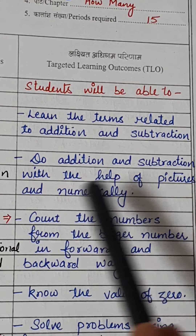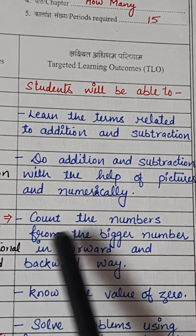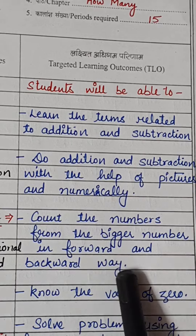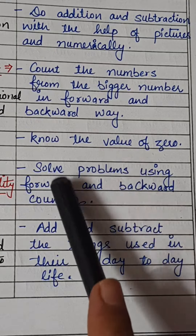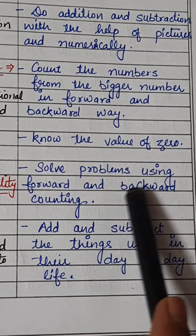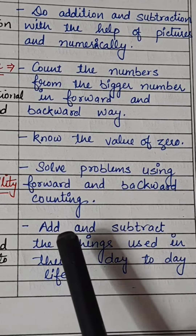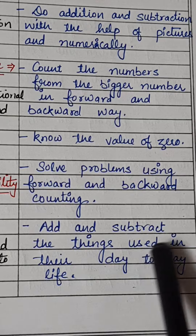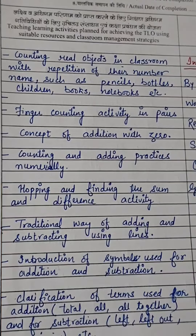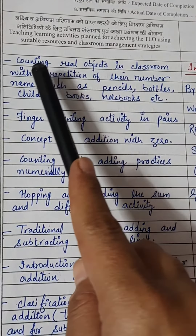They will do addition and subtraction with the help of pictures and numerically. They'll count numbers from the bigger number in forward and backward ways. They will know the value of zero. They will solve problems using forward and backward counting, and they'll add and subtract things used in their day-to-day life.